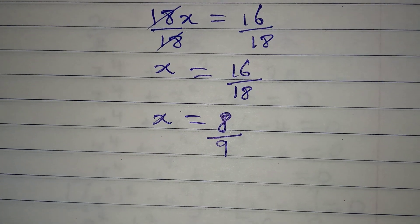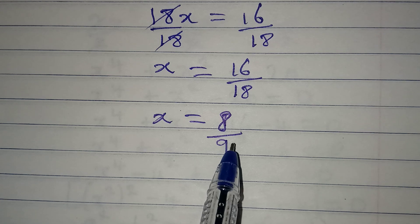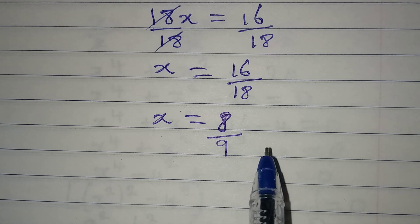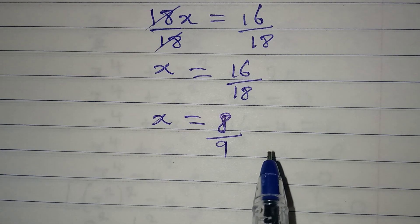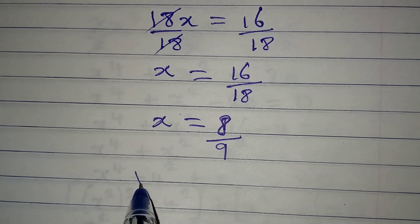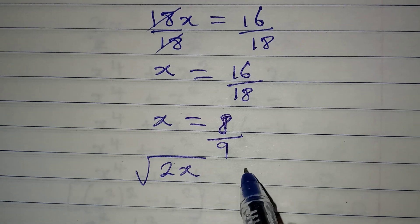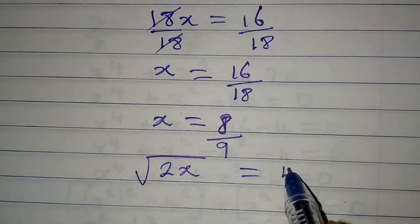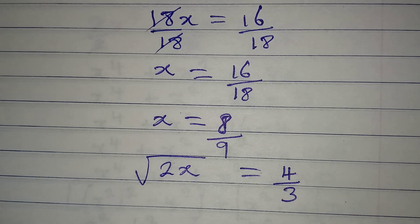So this is the value of x that satisfies the equation, but then I want us to go back to the equation and check. We are having square root of 2x to be equal to 4 over 3.